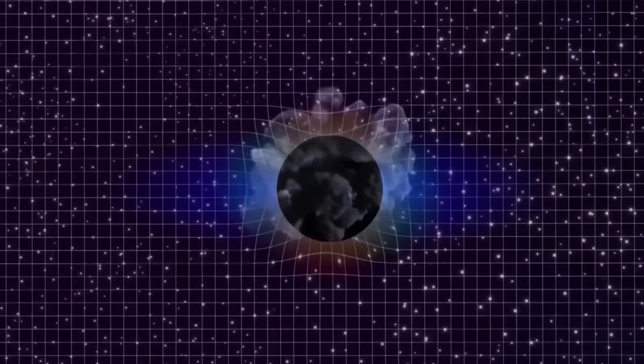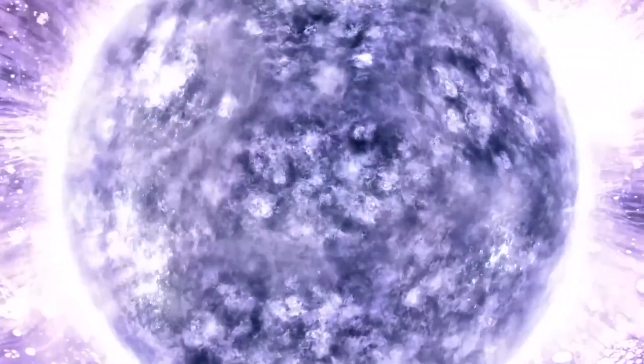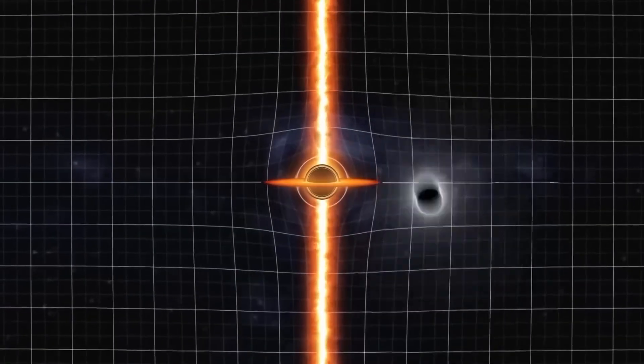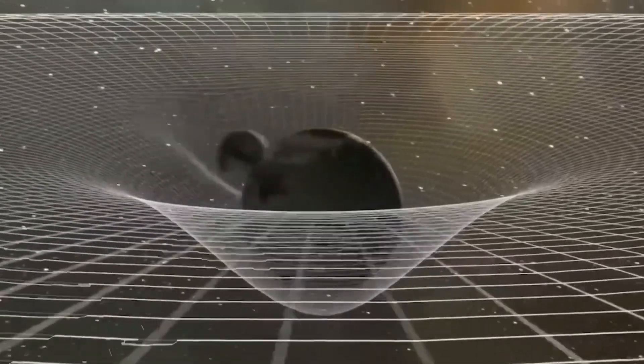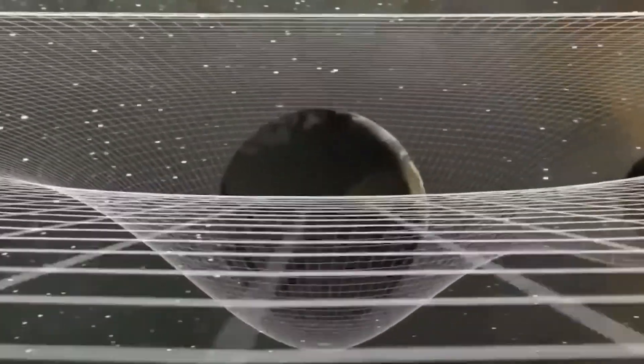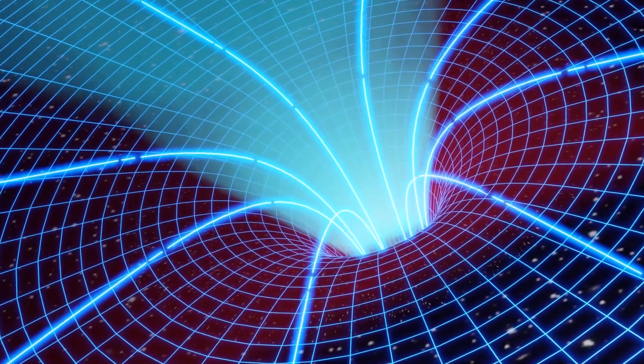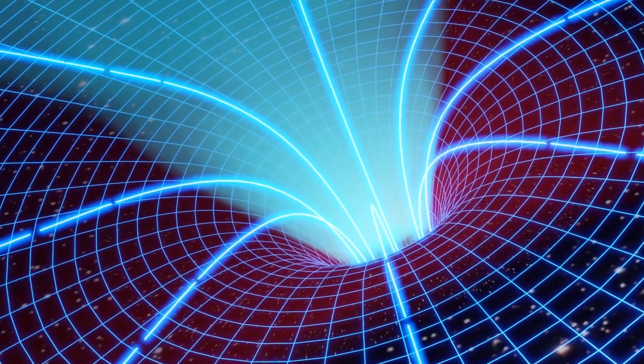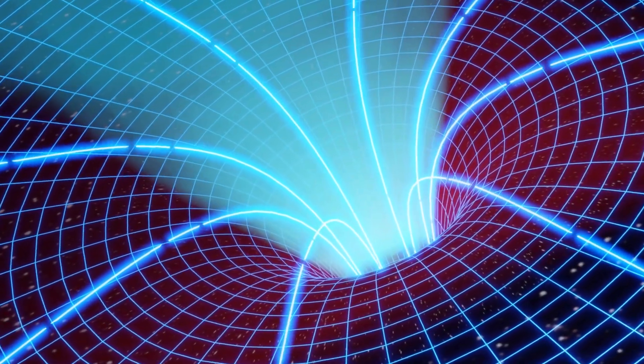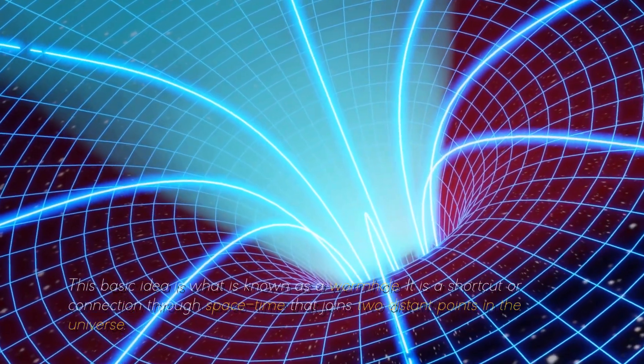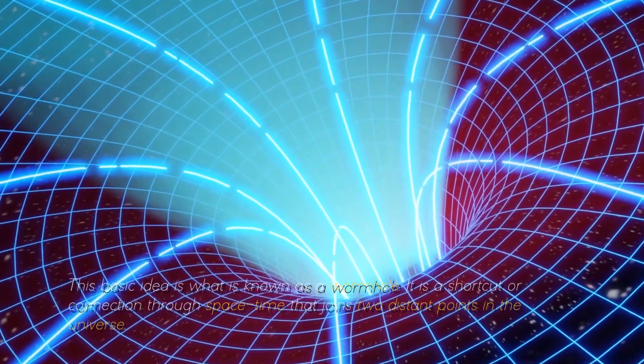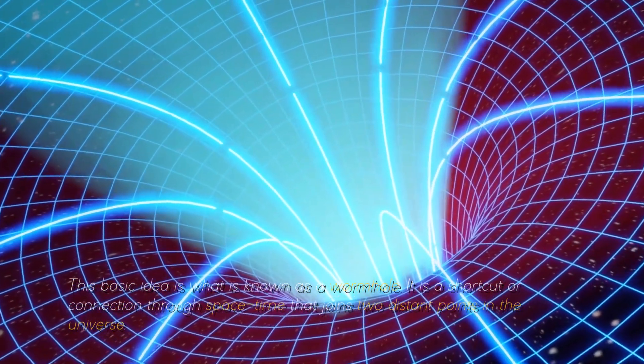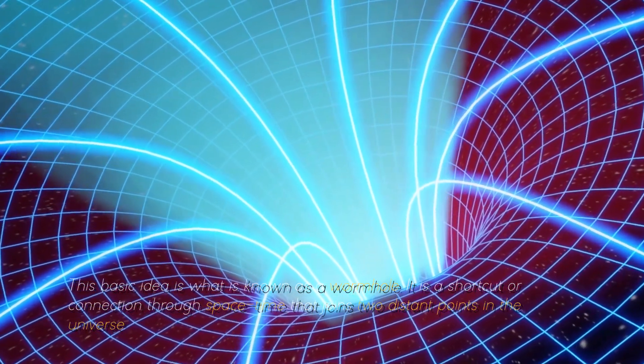To visualize this, we can imagine a sheet of paper representing space-time. If we place two points onto the paper and draw a line between them, we are representing how objects move through space-time. Now, let's consider folding the paper in half and creating a shortcut between those two points. This basic idea is what is known as a wormhole. It is a shortcut or connection through space-time that joins two distant points in the universe.